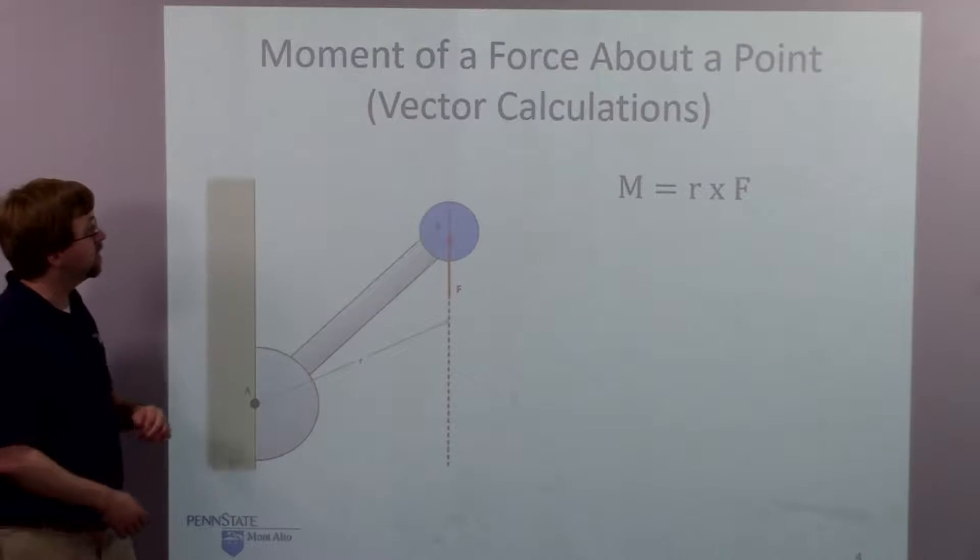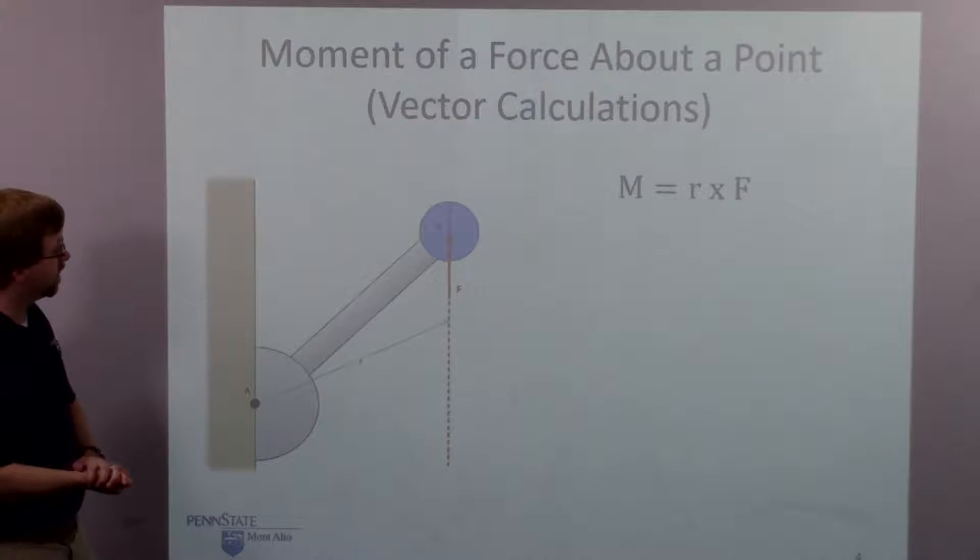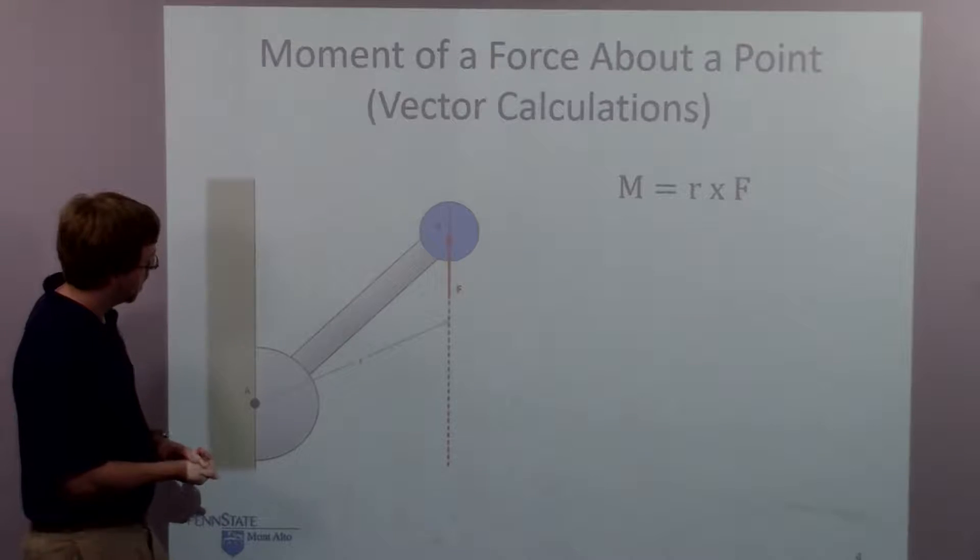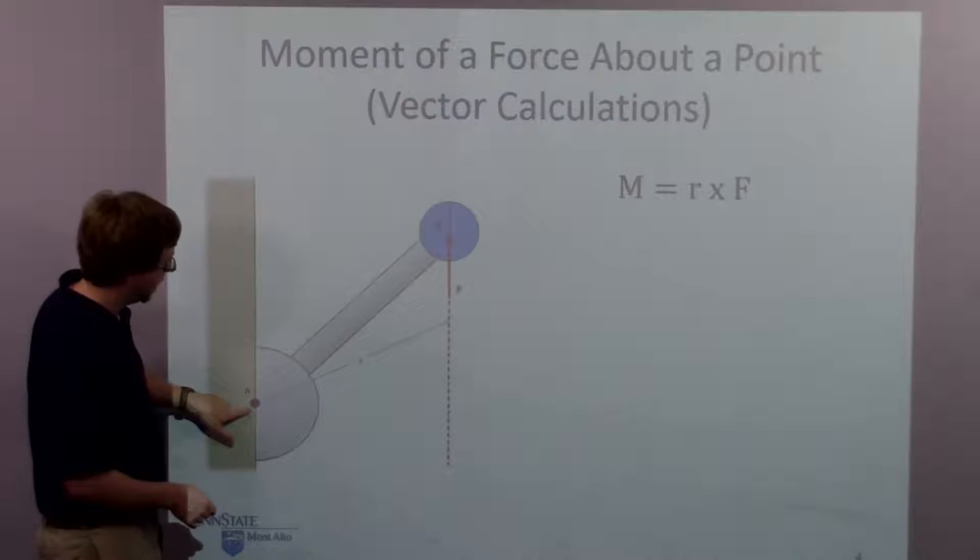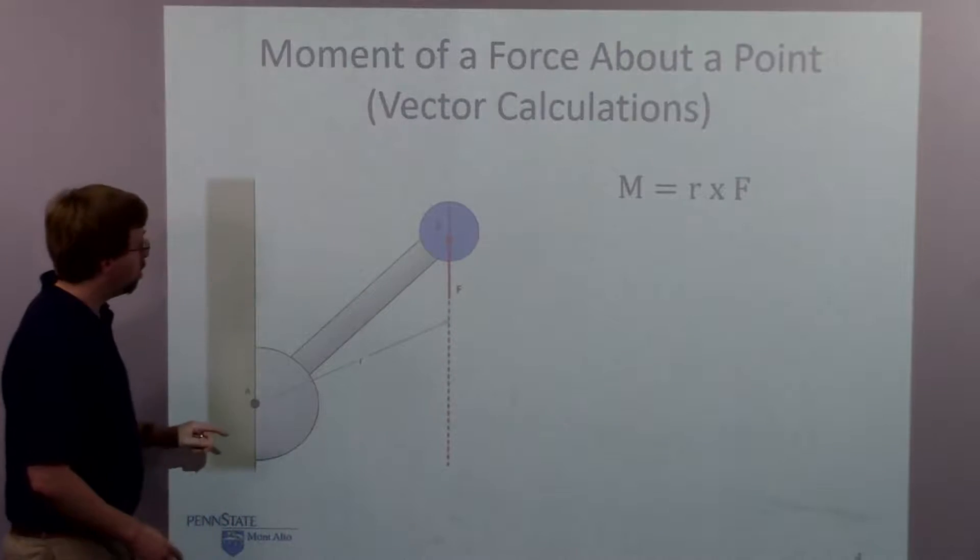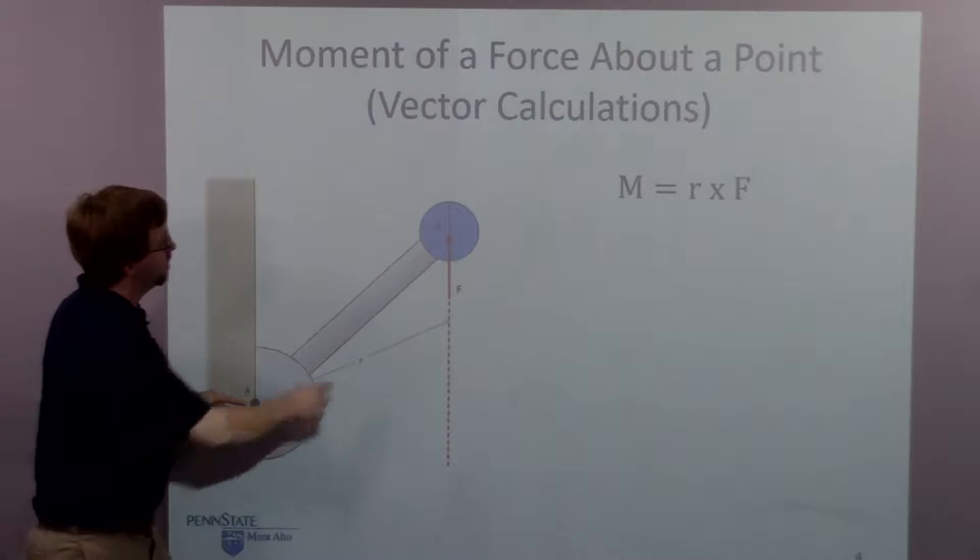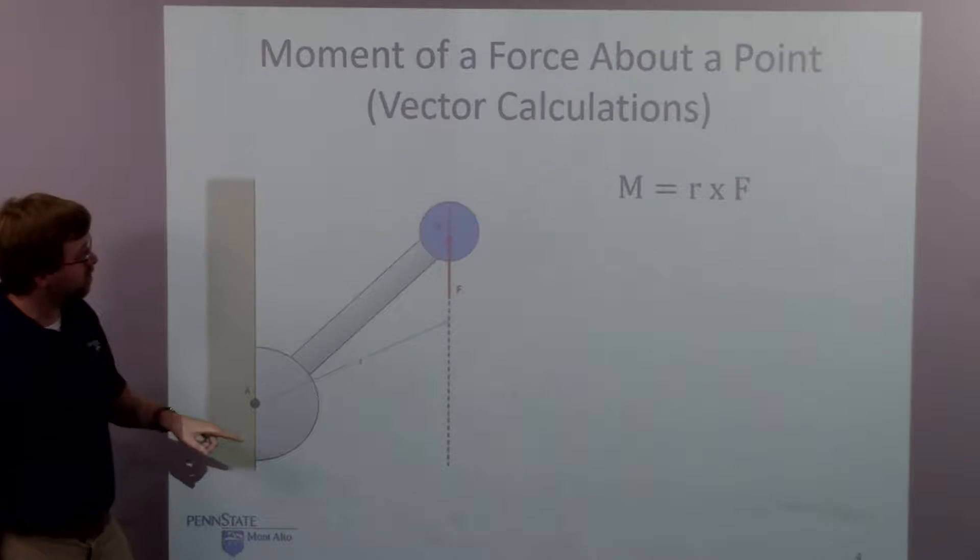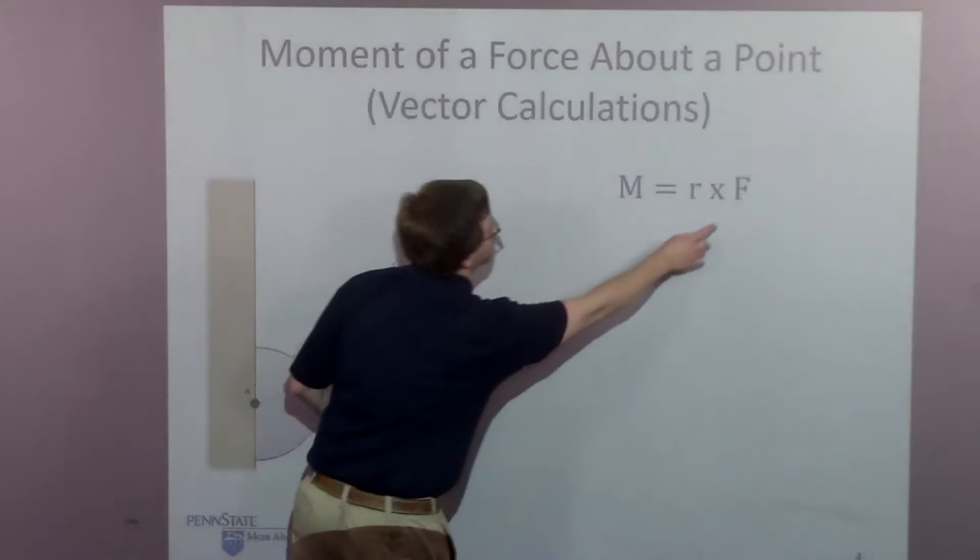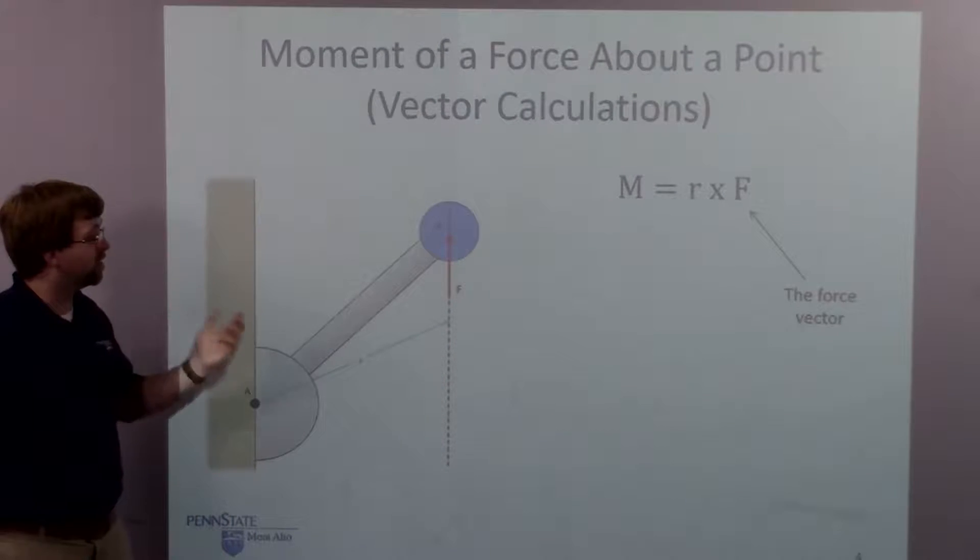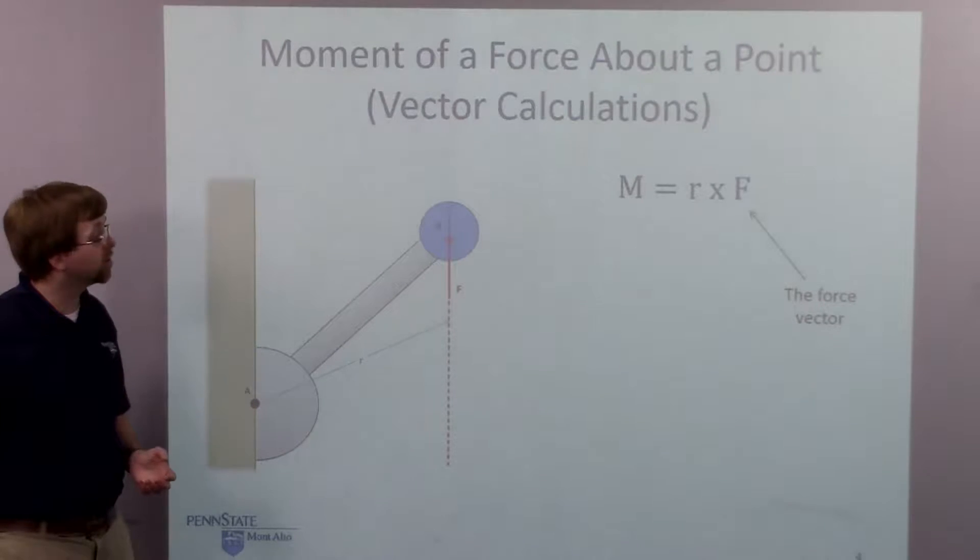So if we have a setup like this, we've got kind of our lever that we had before. We've got point A down here on the lever, and we're pushing with this force up here. The moment that this force f is exerting about point A is going to be r cross f, where f is the force vector. So that's just going to have an x, y, and z component for the force.